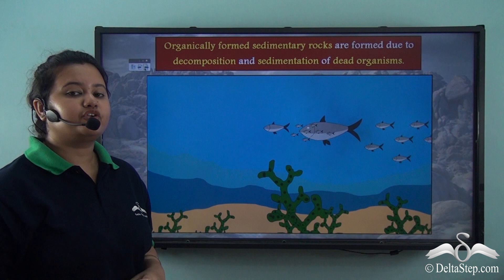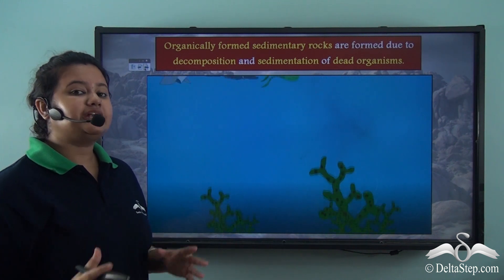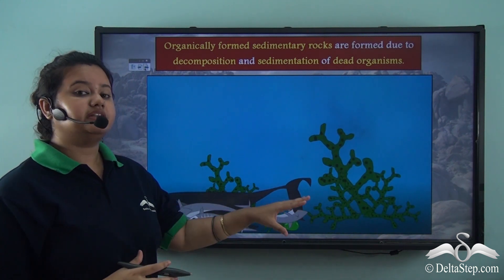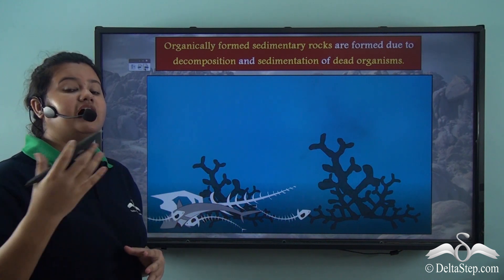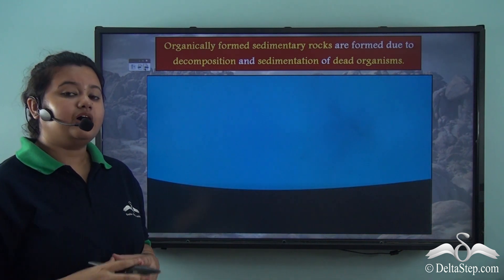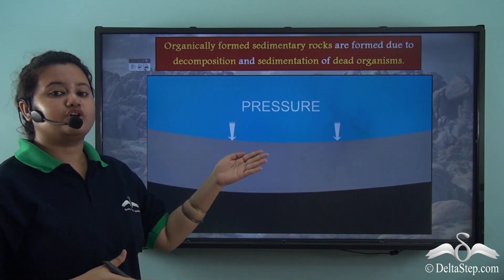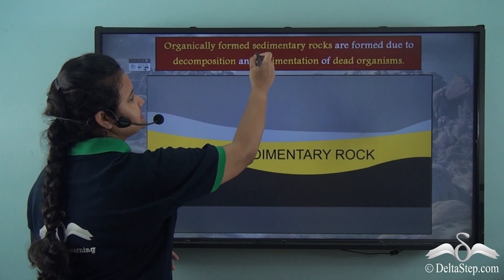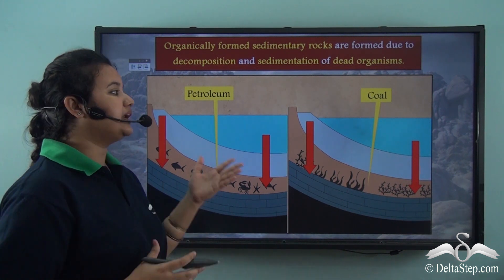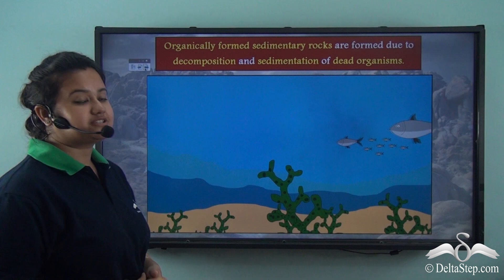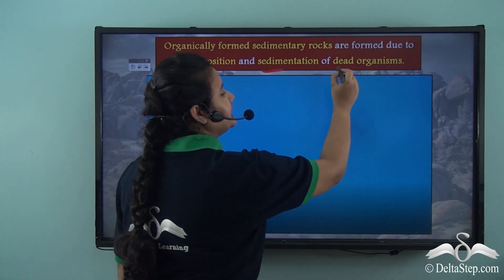Now let's see how they are formed. These fuels are formed from the sediments of marine life. Millions of years ago, the remains of dead plants and animals got buried under the earth. The deposition of these sediments further thickened due to deposition of other sediments layer by layer. The depositions of sediments got hardened due to pressure from the overlying layers of rocks, and finally they formed organically formed sedimentary rocks. Petroleum is mainly formed from the remains of marine animals, while coal is formed from the remains of plants. Thus, organically formed sedimentary rocks are formed due to decomposition and sedimentation of dead organisms.